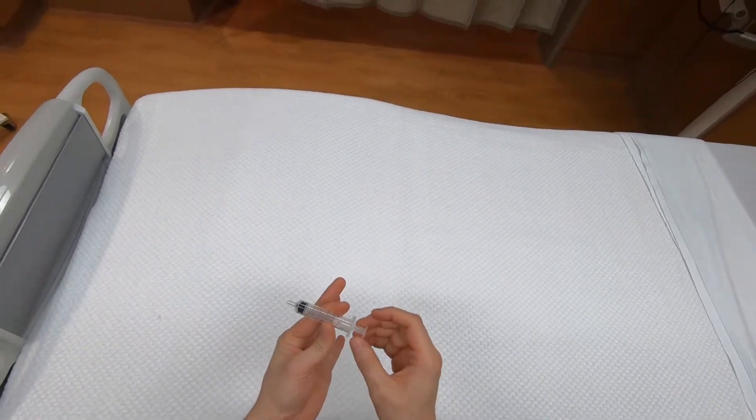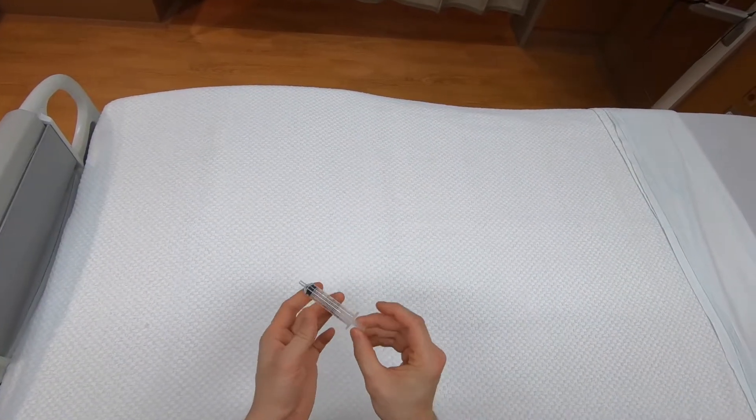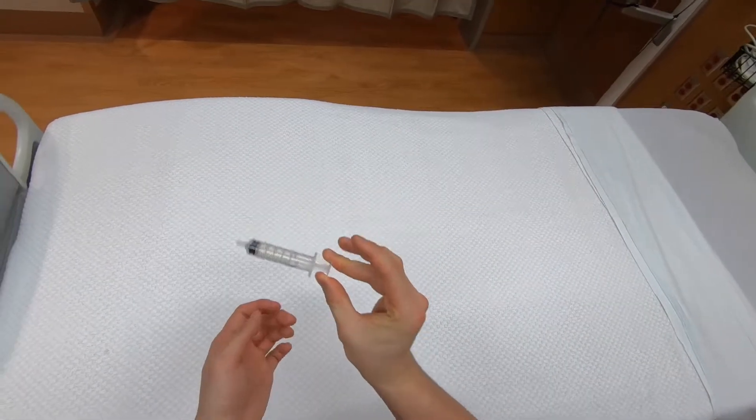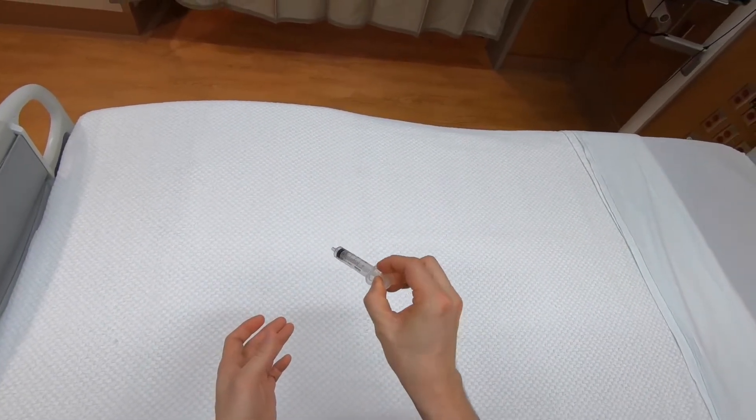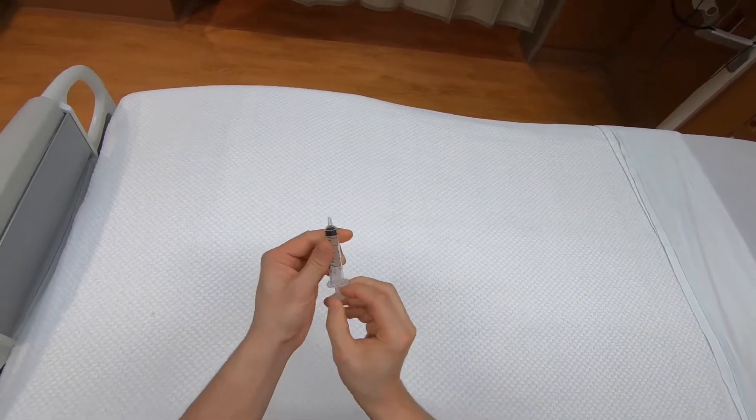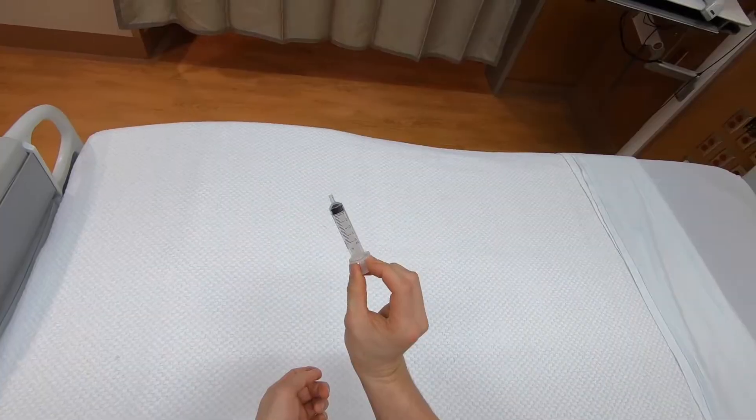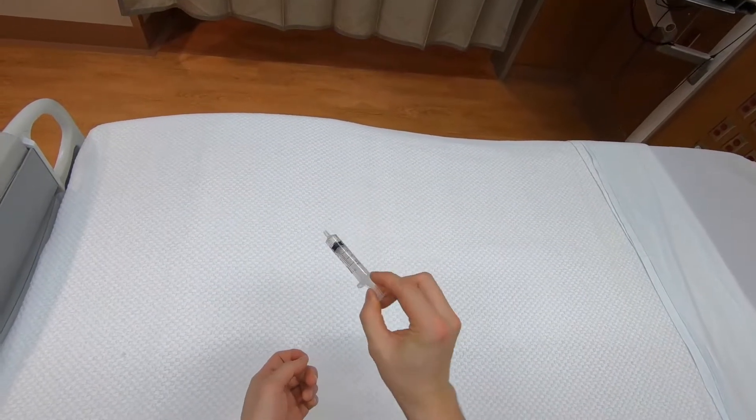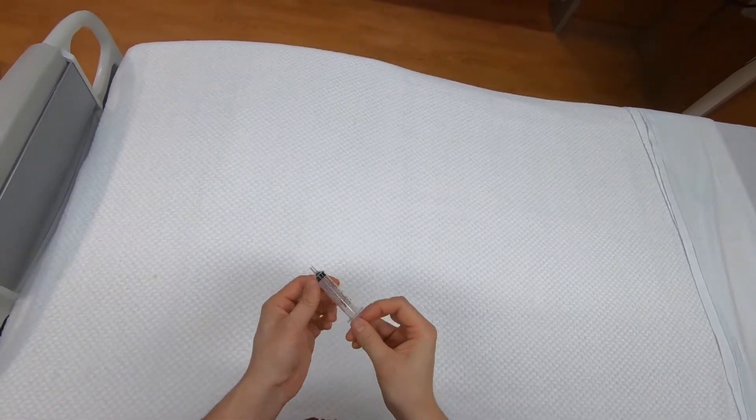There are two, perhaps three, grips that are most useful. The first is to hold the plunger with your thumb and middle finger as you press against the flange of the syringe with your index finger, like this.